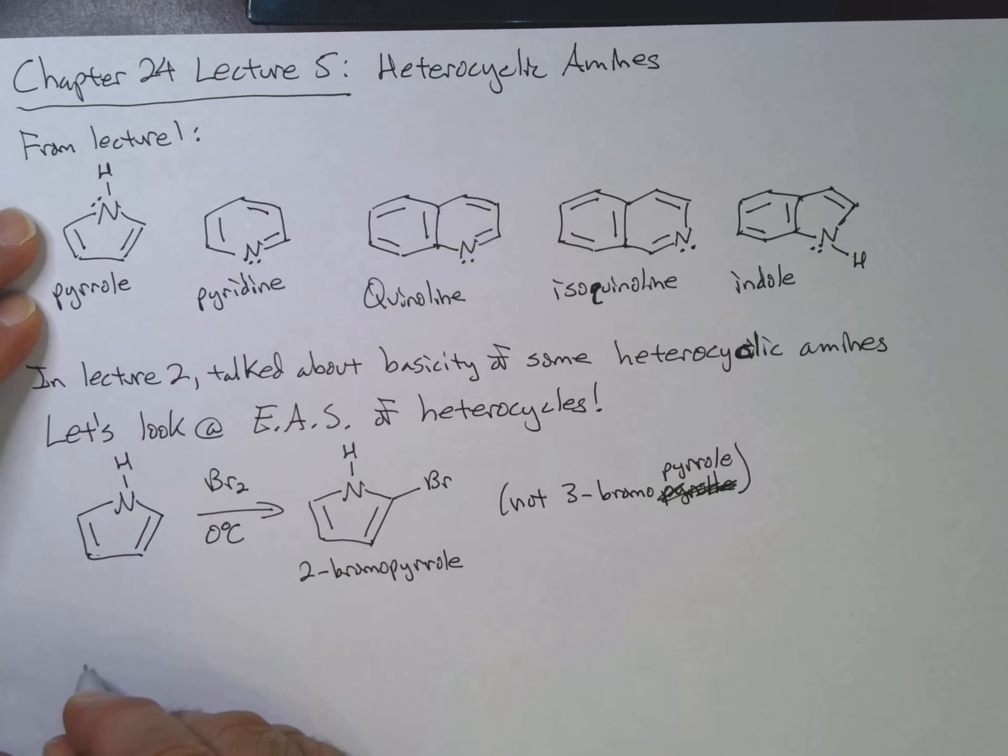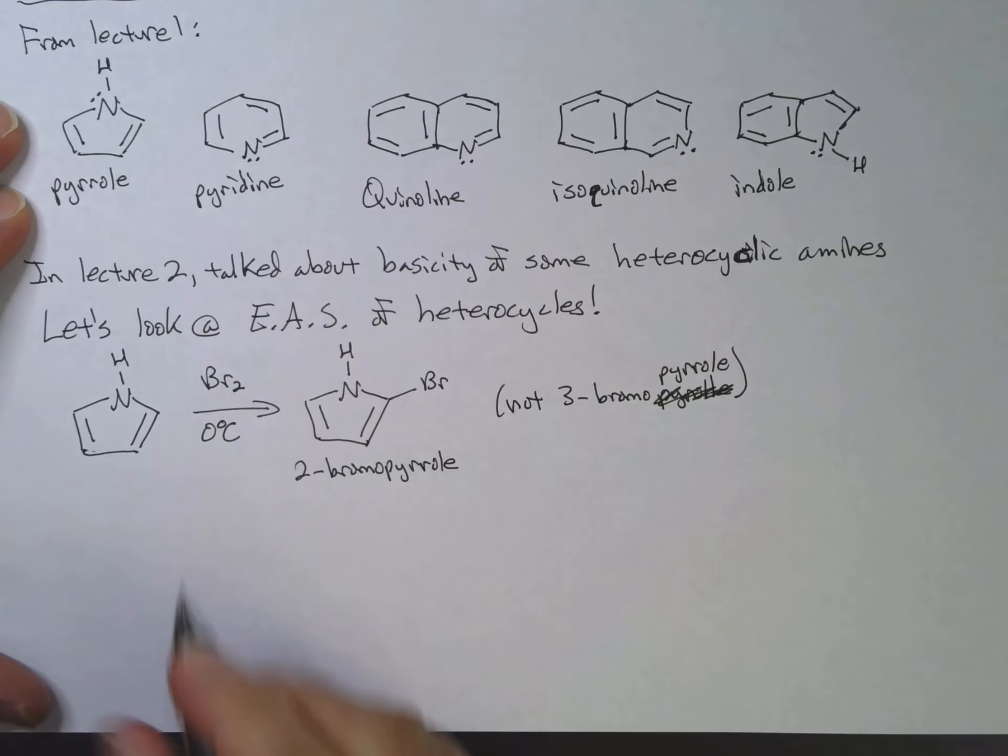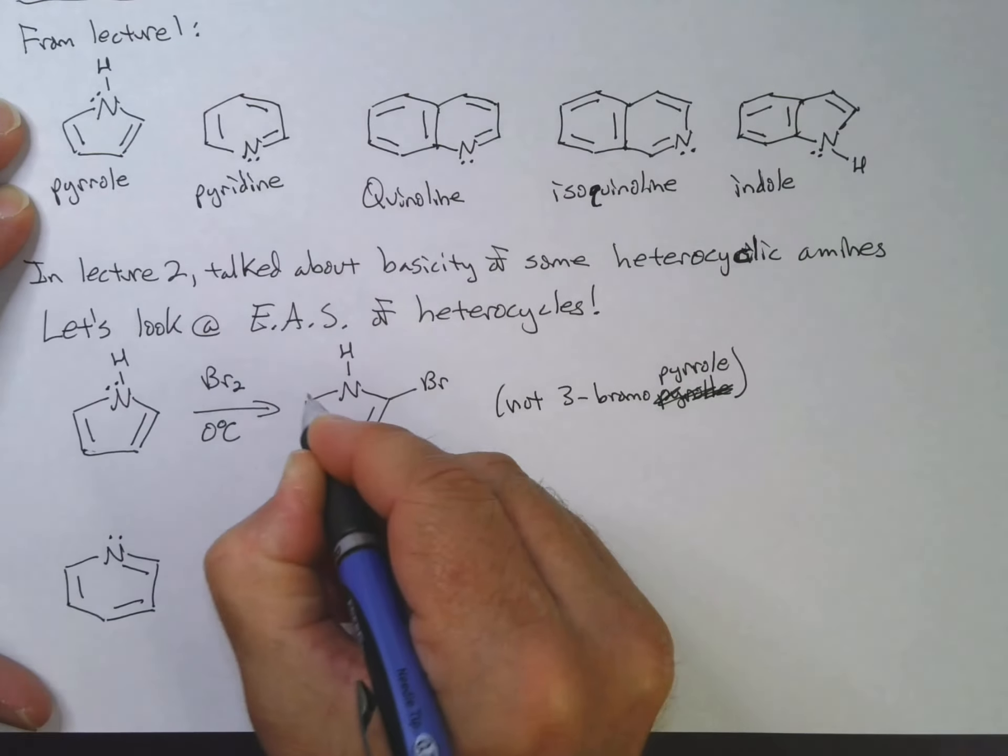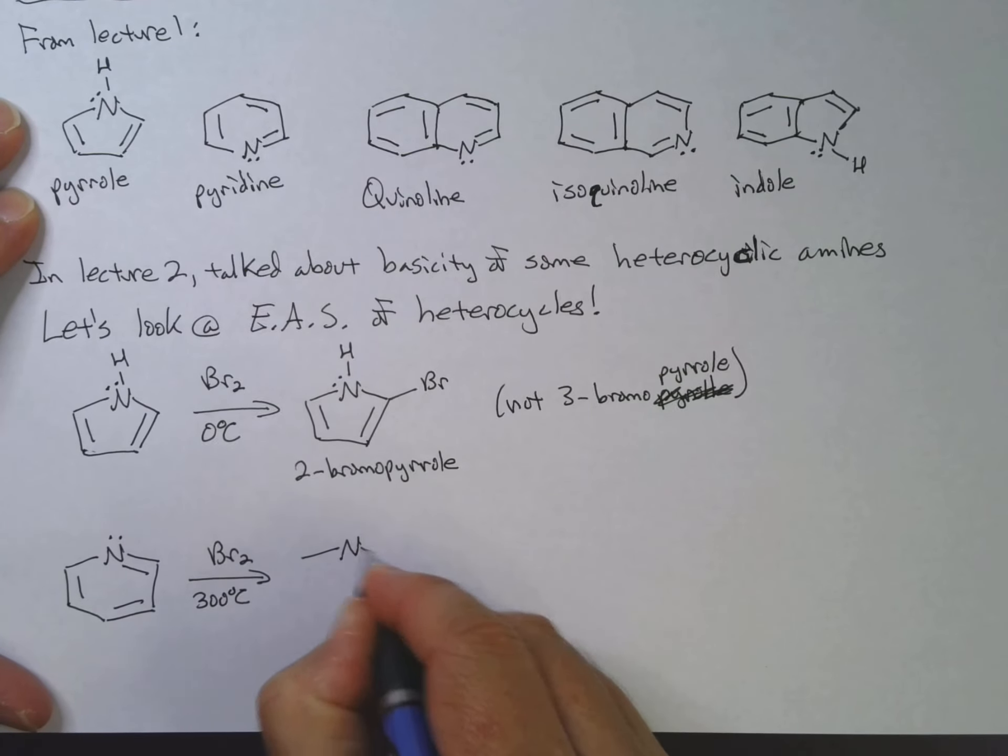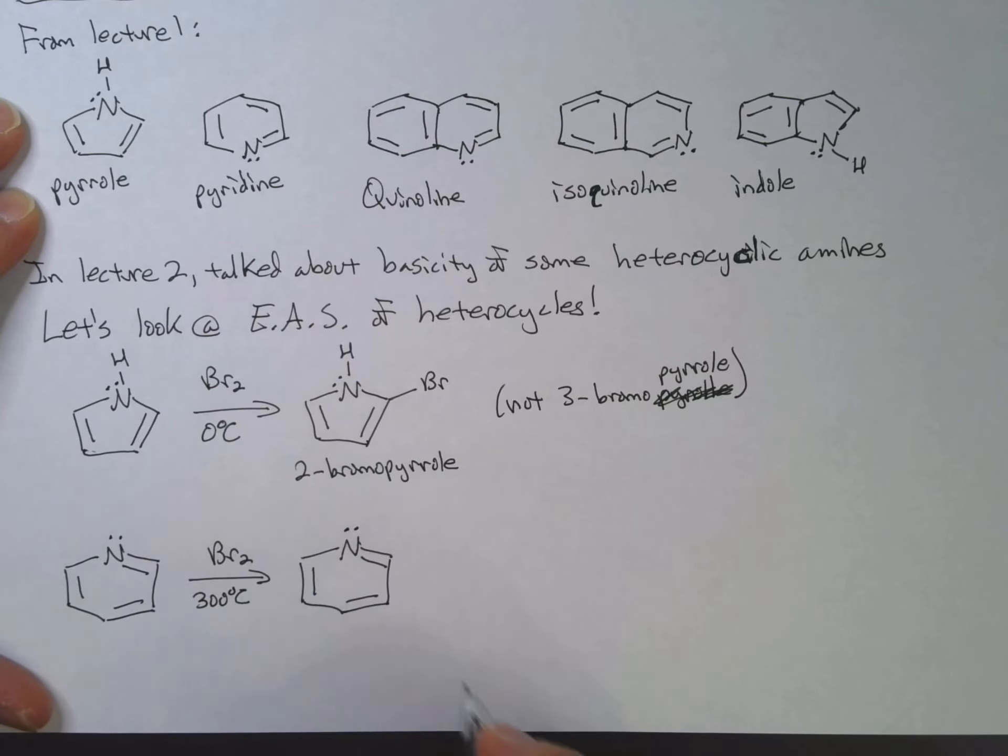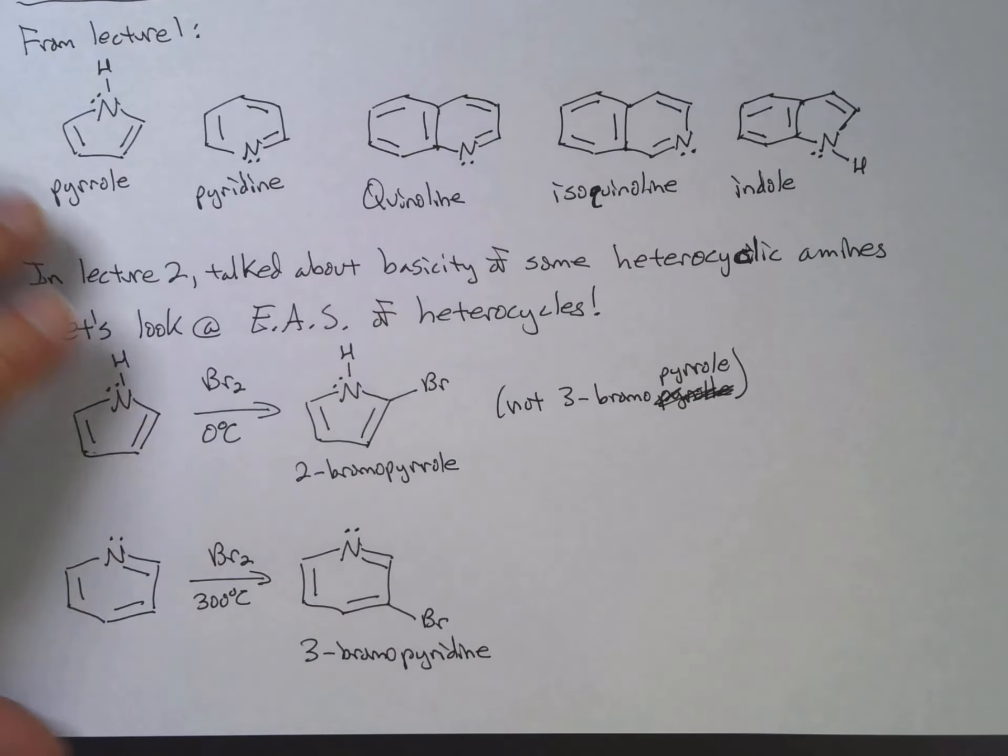We could do something similar with looking at pyridine. I guess I should put in my lone pairs here. It's always helpful. So this guy is actually less reactive, so we're going to have to heat it up. And we end up getting, in this case, three bromo pyrrole. Okay, well that's kind of interesting.